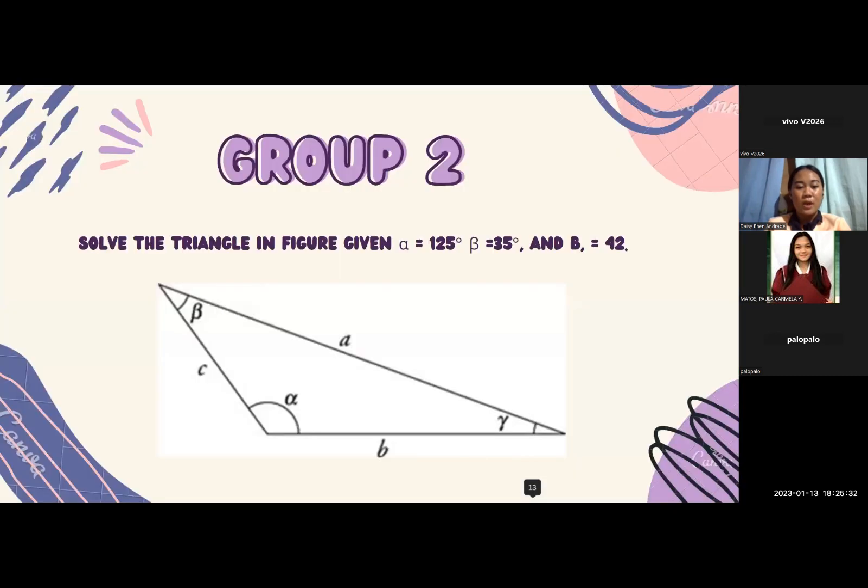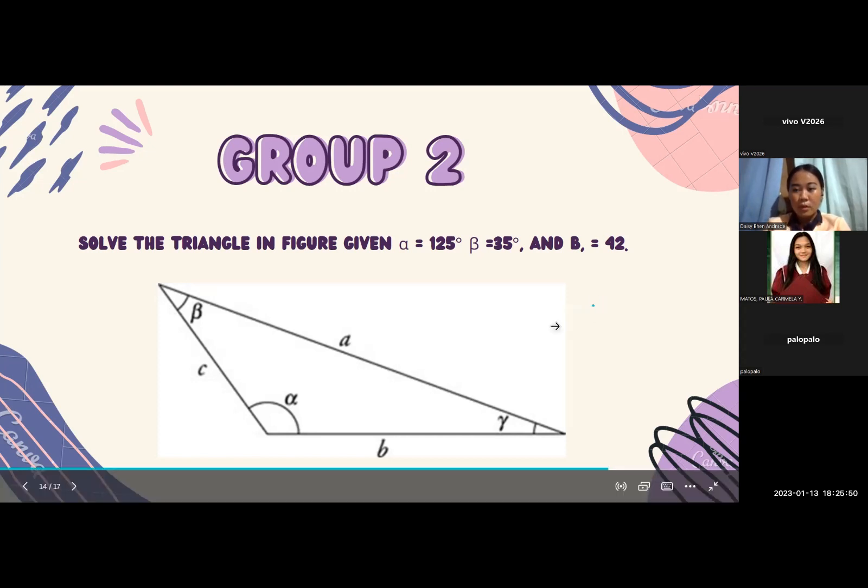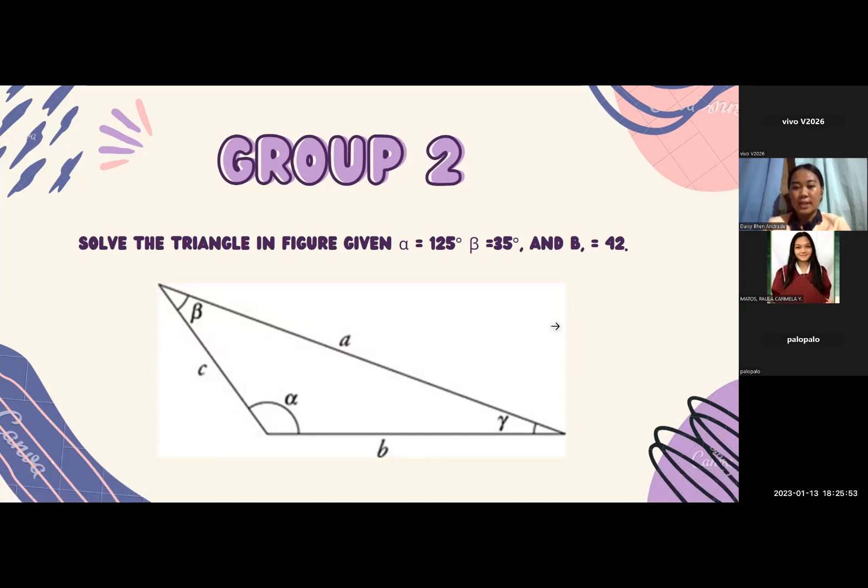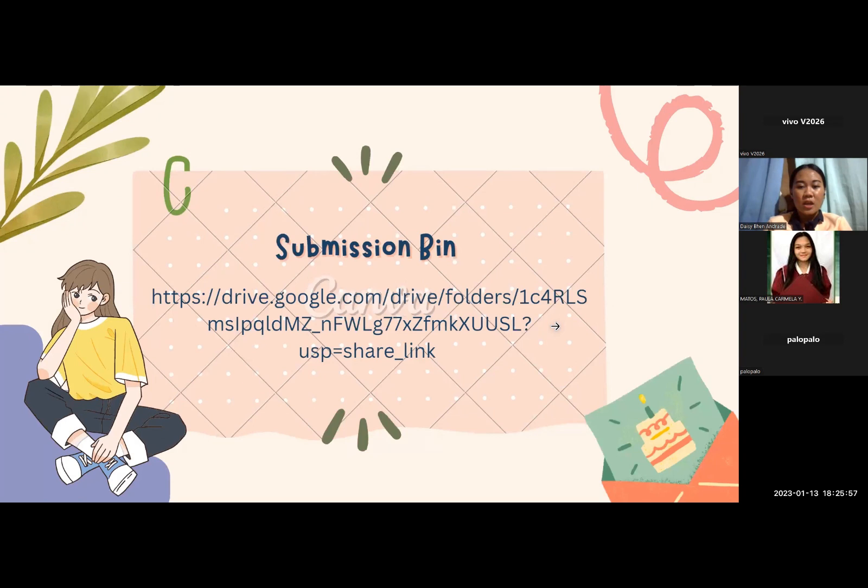Let's proceed to group 2. Solve the triangle in figure where angle A is 25 degrees, angle B is equal to 35 degrees, and side c is equal to 42. Please take a screenshot. Okay, then. So, please submit it on the submission page that I have given here.